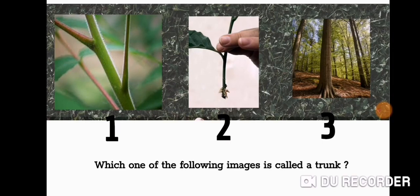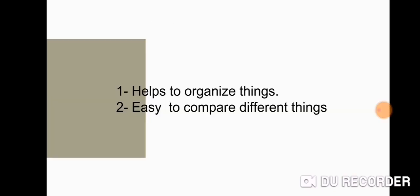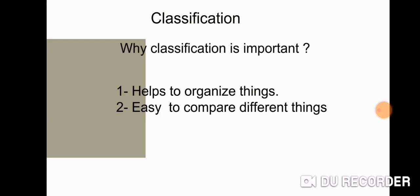Excellent, the answer is number three. Okay, now let's talk about classification. Classification means sorting things into groups depending on their similarities and differences. Why is classification important? Because it helps to organize things and makes it easy to compare different things.